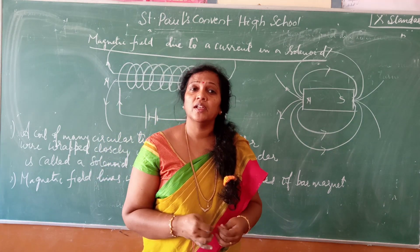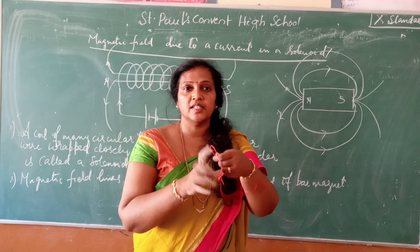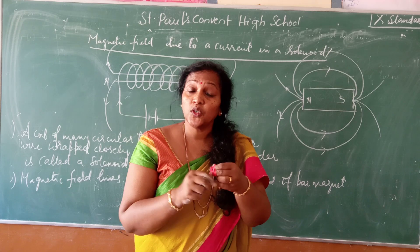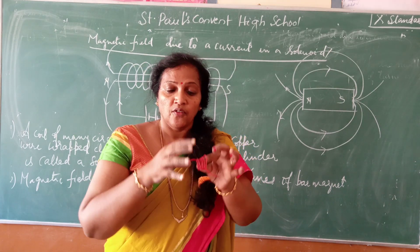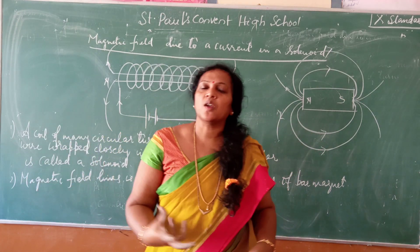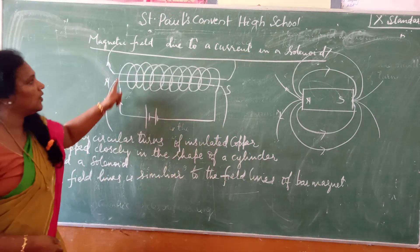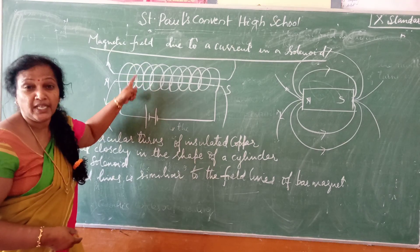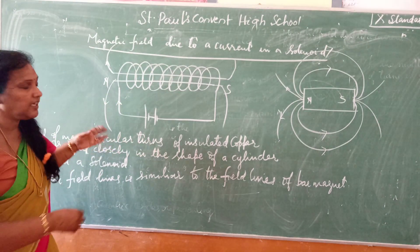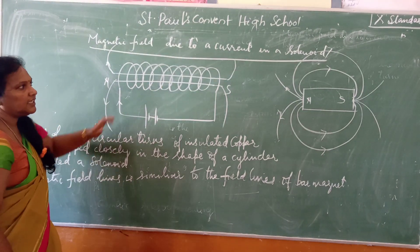What is a solenoid? It is a coil of many circular turns of insulated copper wire wrapped closely in the form of a cylinder. It is called as a solenoid.